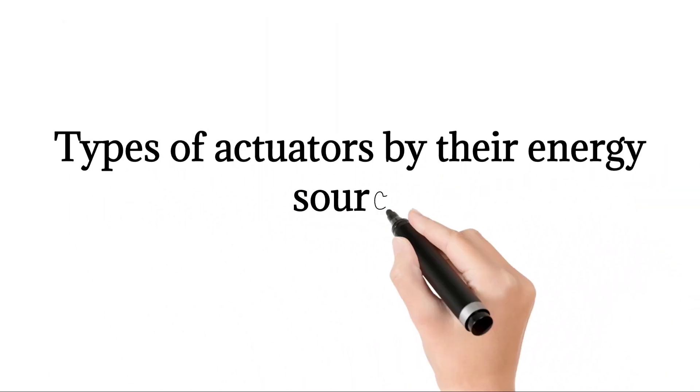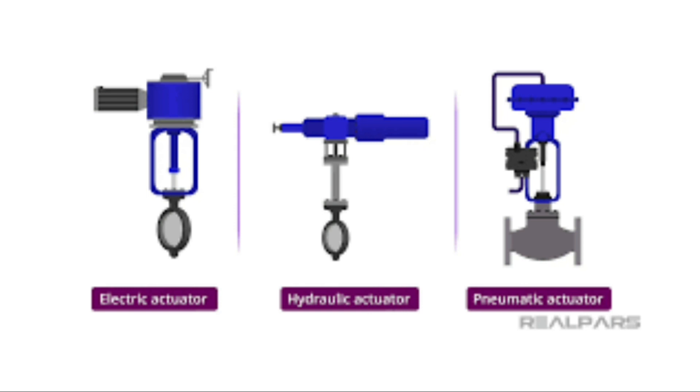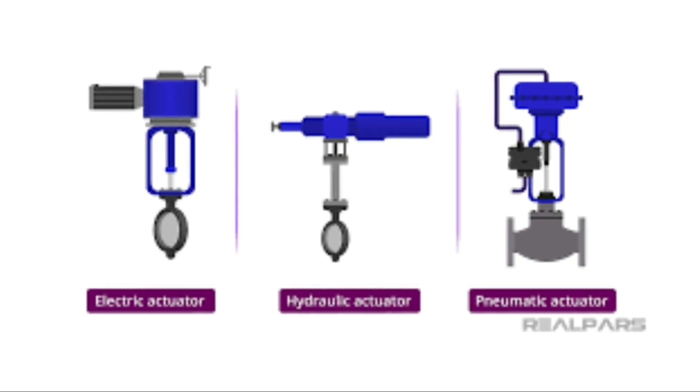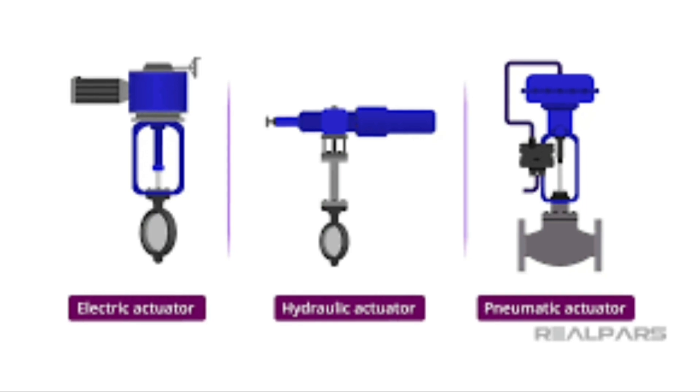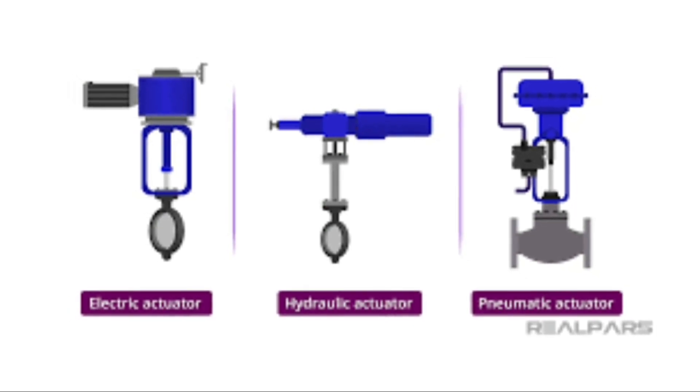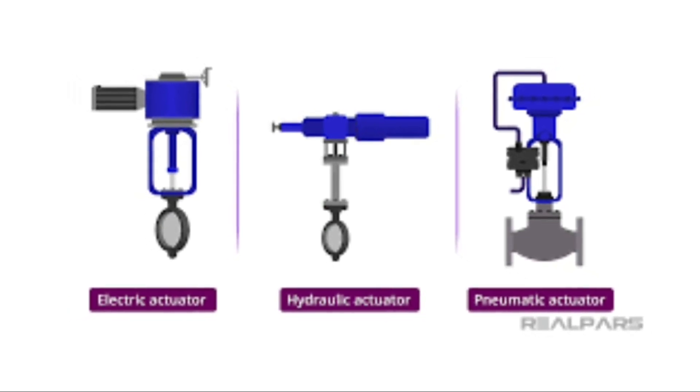Types of actuators by their energy source. There are three typical types of actuators used in industry as defined by their energy source. The typical actuators in the industry include electric, hydraulic, and pneumatic.